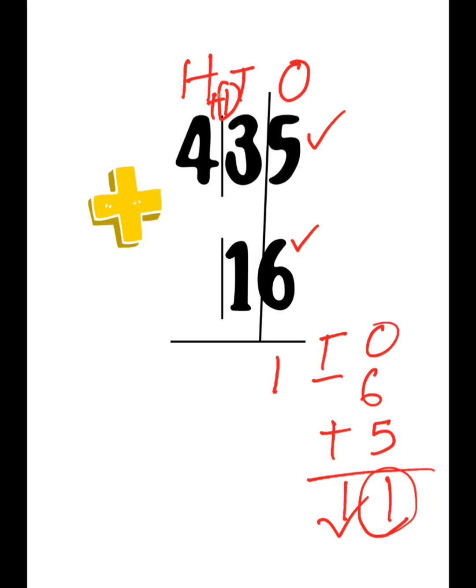3 plus 1 is 4. 4 plus 1 is 5. So what's left? 4, there is nothing to add. So we write 4. The answer is 451, understood?